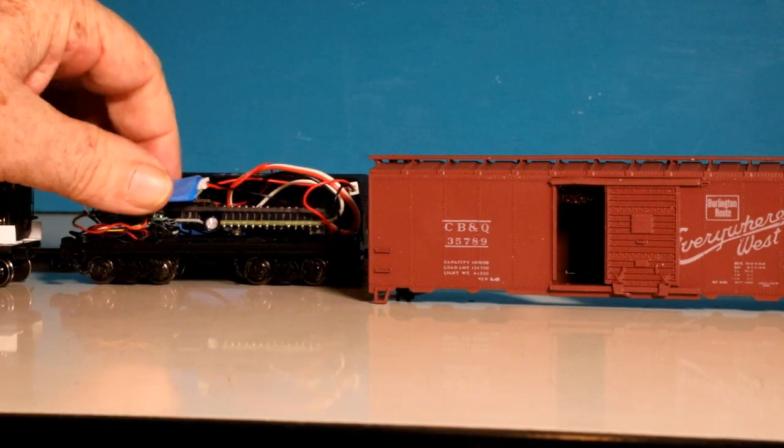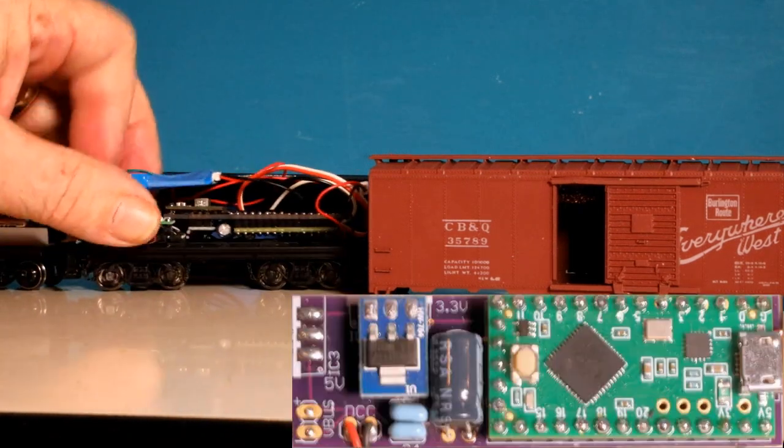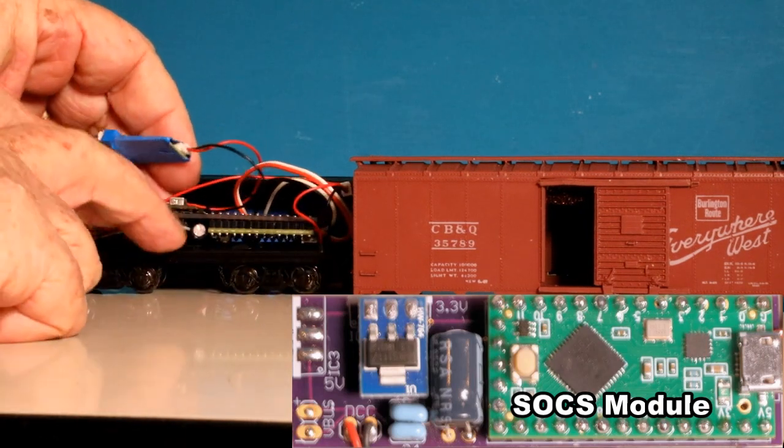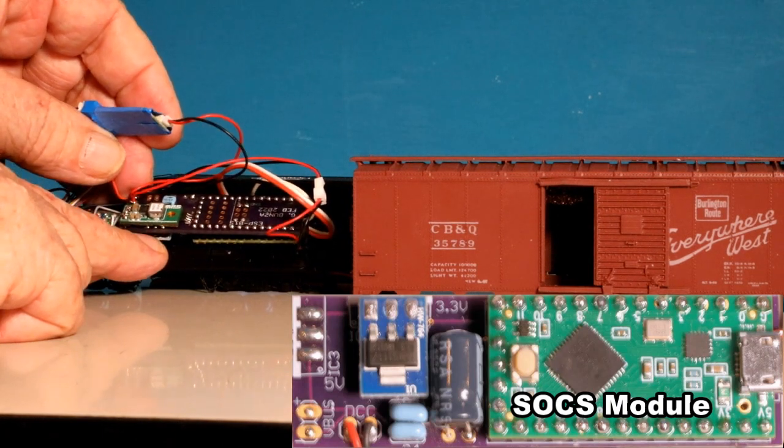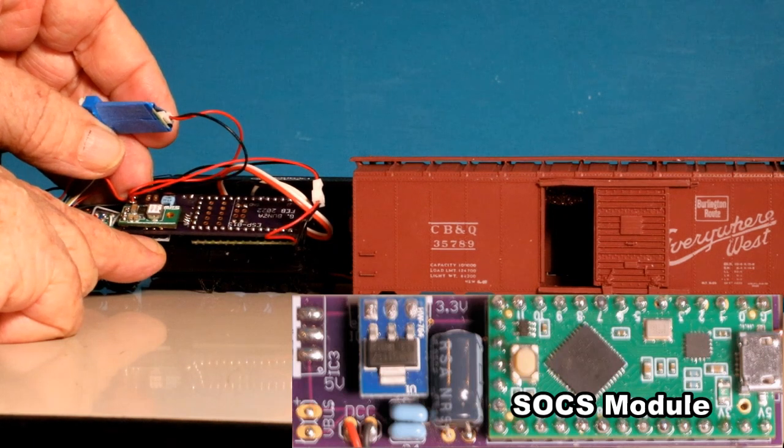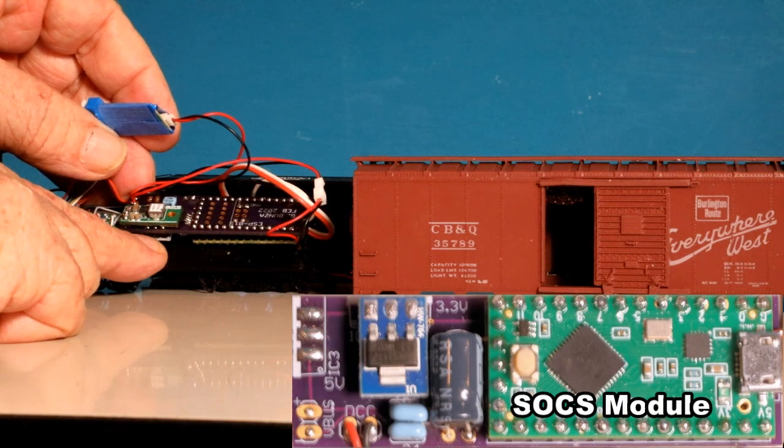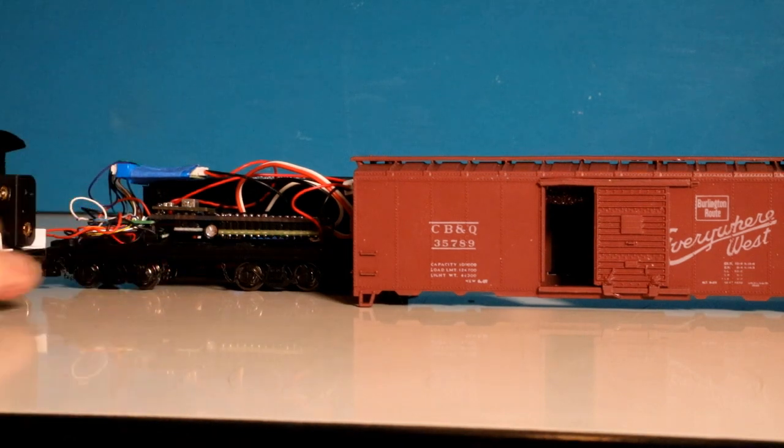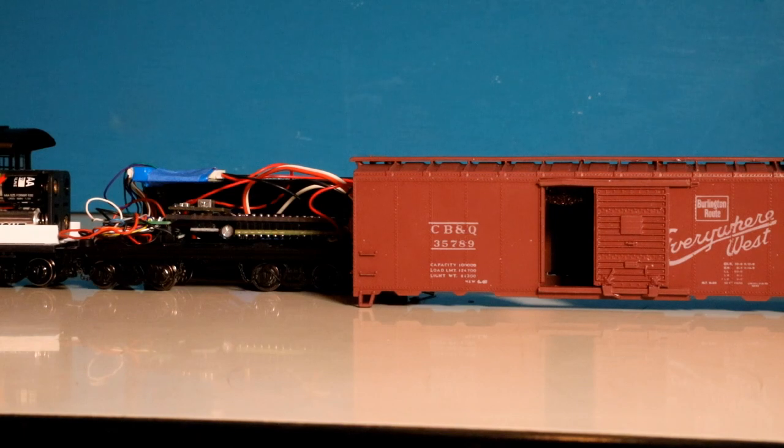You can see that it's actually a pretty small little module. If I move the decoder out of the way, I can give you a better picture of it. That's the SOCS module that's right there. It's about 2.3 something inches long and about three quarters of an inch wide. It's kind of like the size of a, I would call a large decoder. There are a lot smaller decoders than that now. But it carries everything necessary to give you direct WiFi control of whatever DCC decoder it's plugged into.